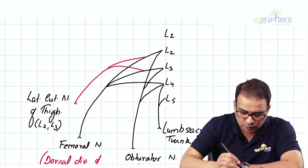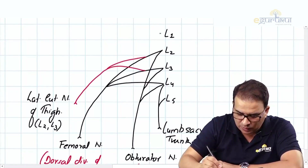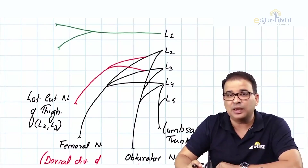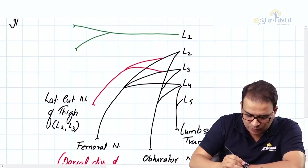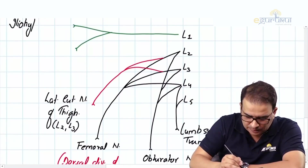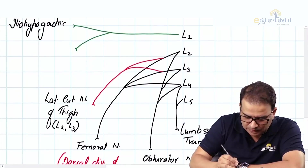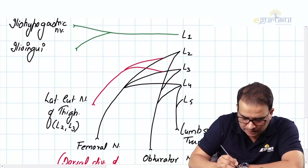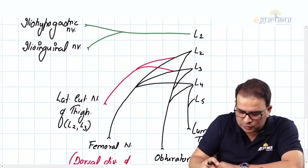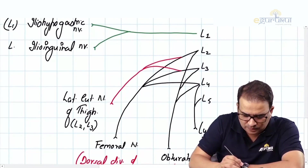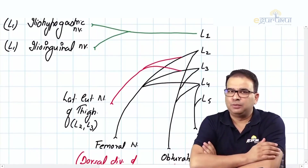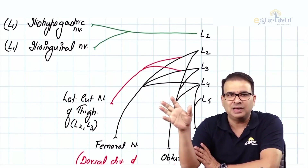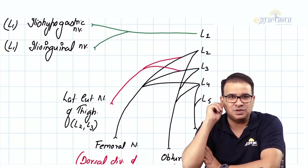There is also a nerve coming from L1 that divides into two: the iliohypogastric nerve and the ilioinguinal nerve. Both have a root value of L1. T12 can sometimes also contribute to both these nerves, but generally L1 is the primary root value for the iliohypogastric and ilioinguinal nerves.